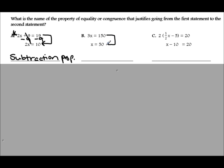For example b, how does the first step become the last step? Pause the video and see if you get what I get. If you had been asked to solve this equation, you would divide both sides by 3 and get x equals 50. The property used is the division property of equality.